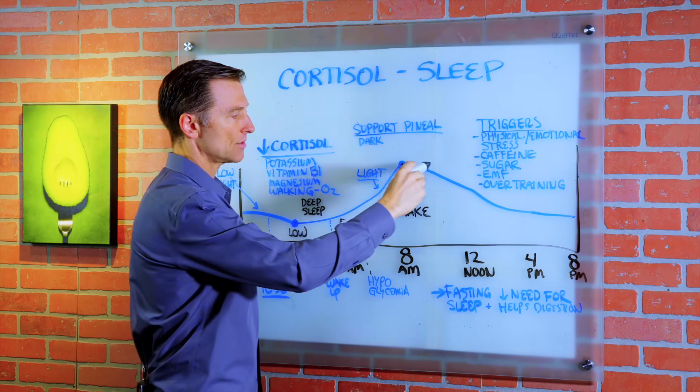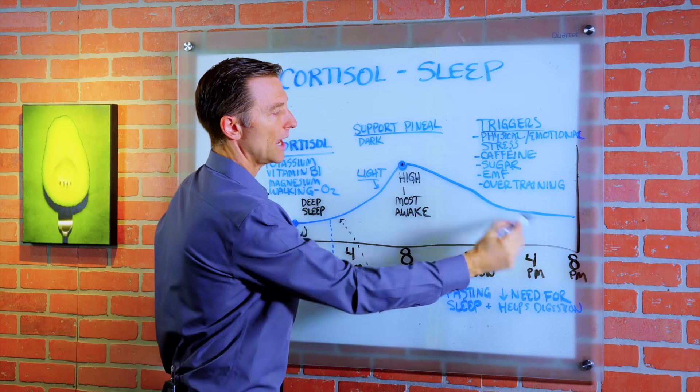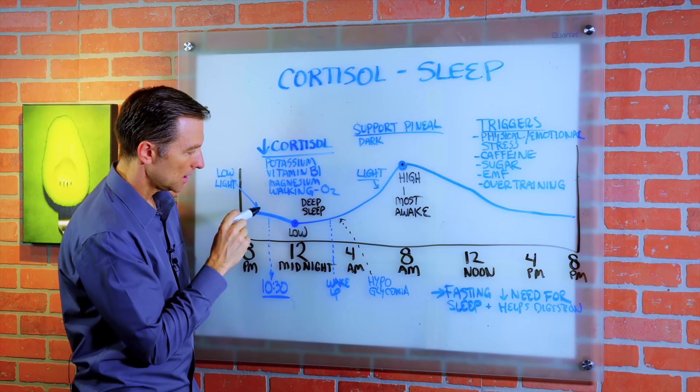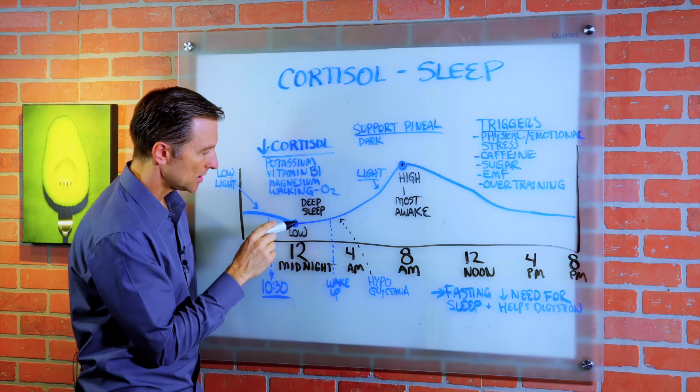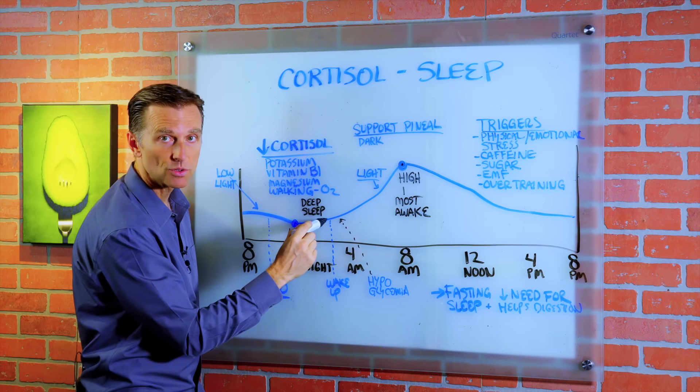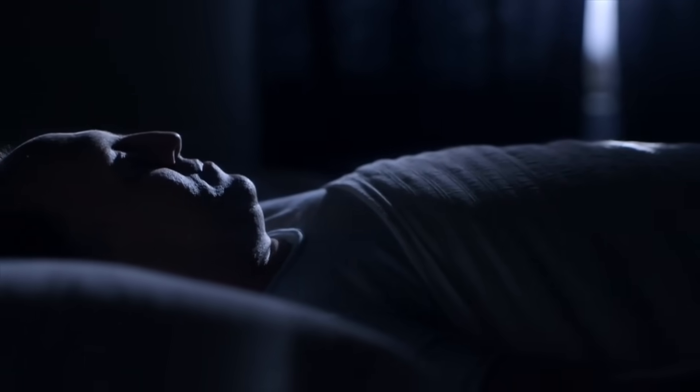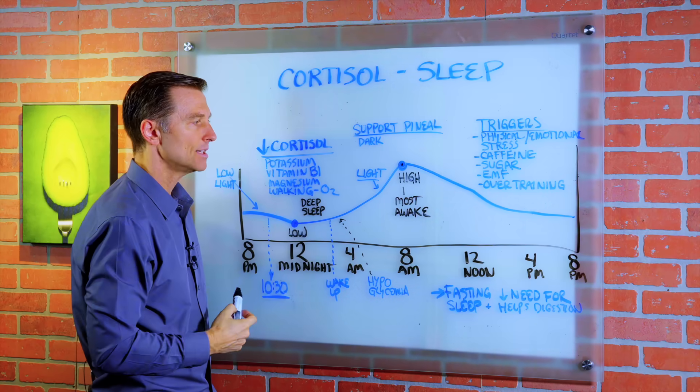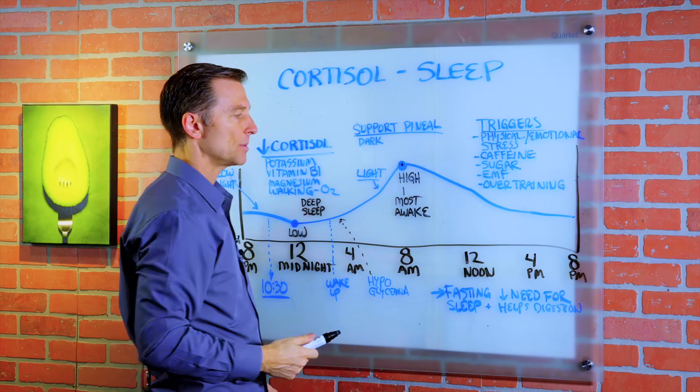And then it starts to decrease through the day: 12 noon, four, eight, starts coming down, and then 8 p.m. over here. And then it hits its lowest between 12 and like two o'clock in the middle of the night, 12 midnight and 2 a.m. This is when we're supposed to be sleeping, in deep sleep. So that's the normal pattern that you're supposed to go through.